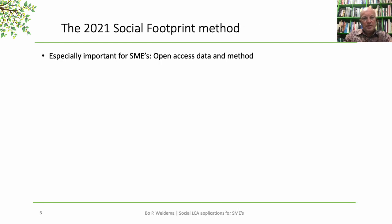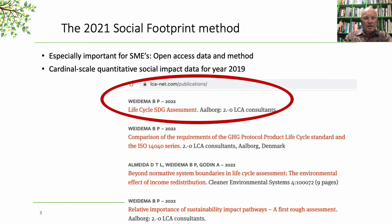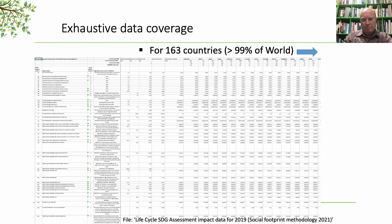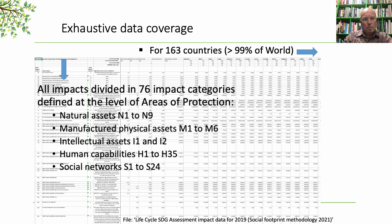What is especially important for SMEs is that the method is open access, as well as the underlying database. Cardinal scale quantitative social impact data are available now for year 2019 on this website. The data are exhaustive — they cover 163 countries, which is 99% of the world's GDP, as well as population and impacts. All the impacts are divided into 76 impact categories defined at the level of areas of protection.